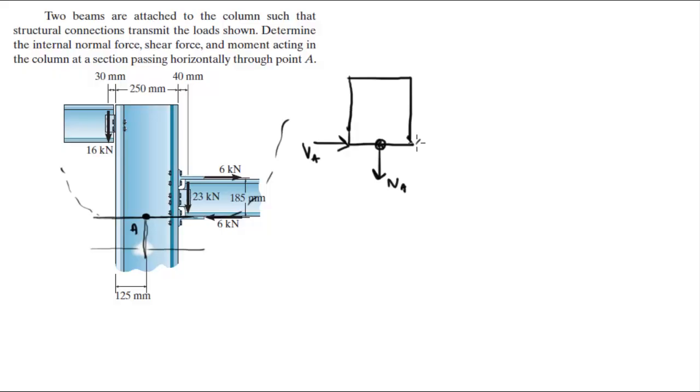You got a 6k going this way, a 6k going to the right, a 23k going down, and a 16k going this way somewhere over here.